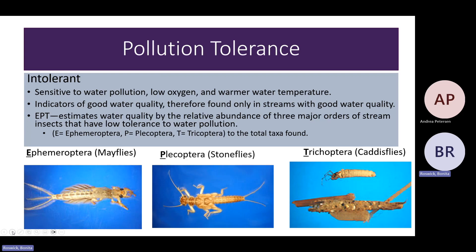We're going to go through the pollution tolerance types. The first category is the intolerant macroinvertebrates — these are the ones that need really clean water. They're very sensitive to water pollution, oxygen amounts, and water temperature. If you remember from the water chemistry video, oxygen amounts are dependent on temperature: the warmer water gets, the less capacity it has to hold oxygen. The intolerant or sensitive bugs are good indicators of water quality and are only found in streams with good water quality. The three examples here are mayflies (Ephemeroptera), stoneflies (Plecoptera), and caddisflies (Trichoptera).